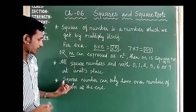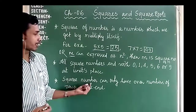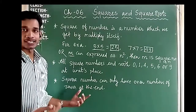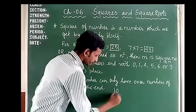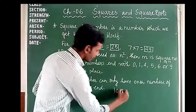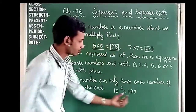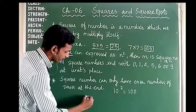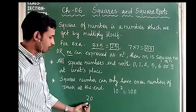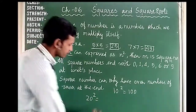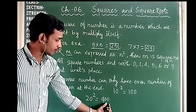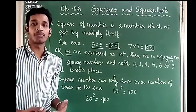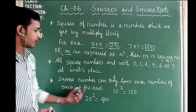The next property about square numbers is that a square number can only have an even number of zeros at the end. For example, 10 squared is 100 — that has 2 zeros, which is even. And 20 squared is 400 — that also has 2 zeros. So square numbers have only an even number of zeros at the end.